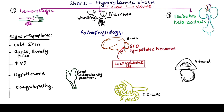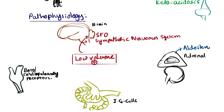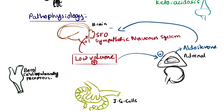Low volume triggers the subfornical organ (SFO) response and increases sympathetic outflow from the brain. The SFO response increases water intake response in an individual. Aldosterone is secreted from the adrenal cortex, and catecholamines are secreted from the medulla in response to low volume. Aldosterone acts on the SFO and circumventricular organs to increase water intake.